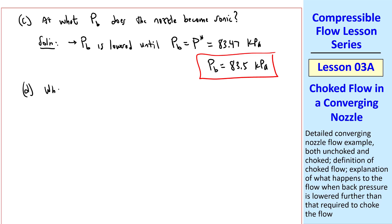Part D is an interesting question, namely, what happens if Pb is lowered even further, in other words, Pb less than P-star? The answer is that the flow is still sonic at the exit plane. It can't go supersonic, because we don't have a converging-diverging duct. We have only here a converging duct.